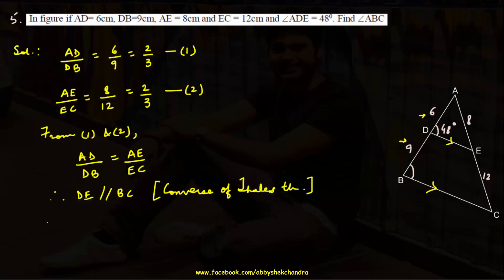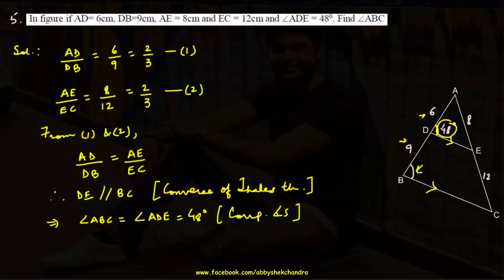Since DE is parallel to BC, angles ADE and ABC are corresponding angles (with AB as transversal). Therefore angle ABC = angle ADE = 48°.